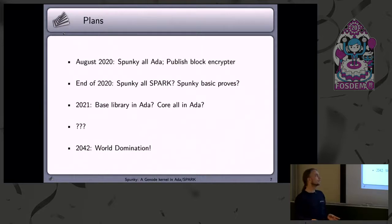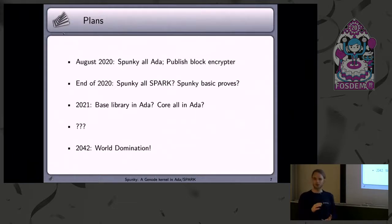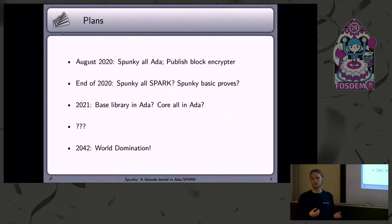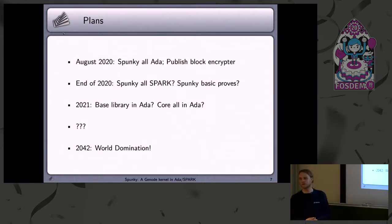This would also allow me to do another project: converting all of core — the whole core component of Gnode — into Ada. This would be really cool because the core component is like the kernel itself, something that everything on Gnode depends on. And it would be a nice experiment for me to learn new stuff with Ada and Spark.